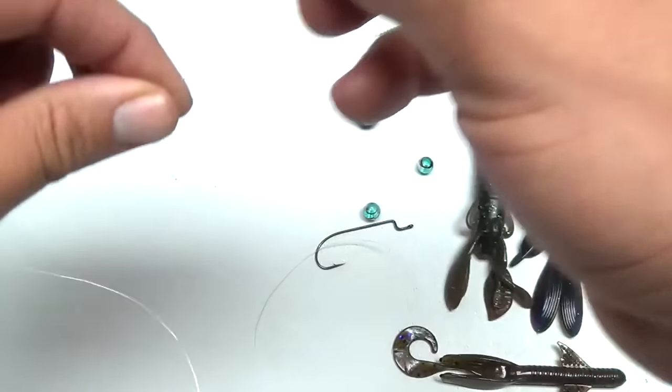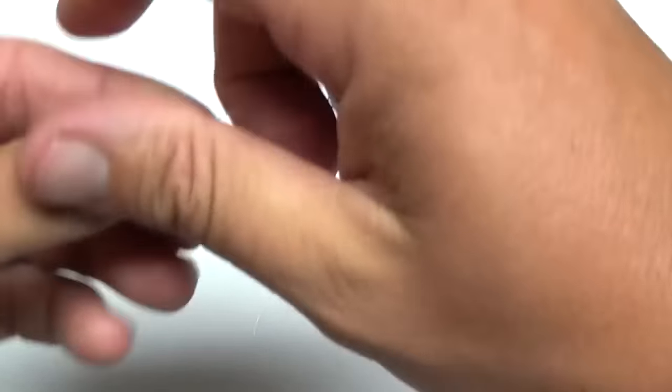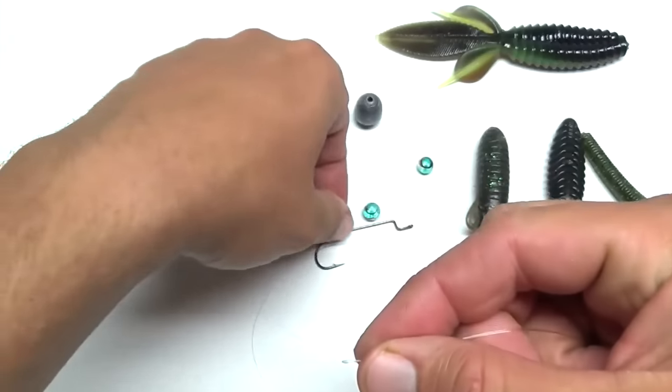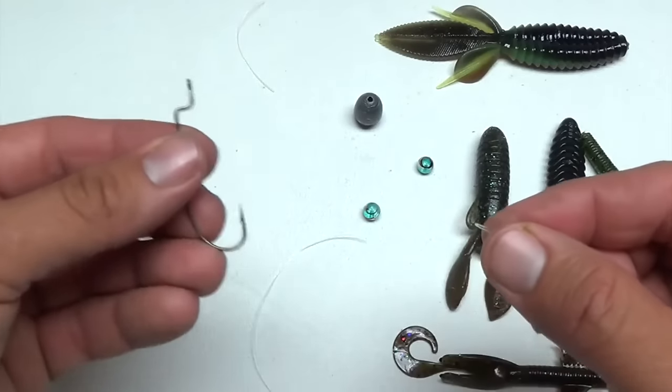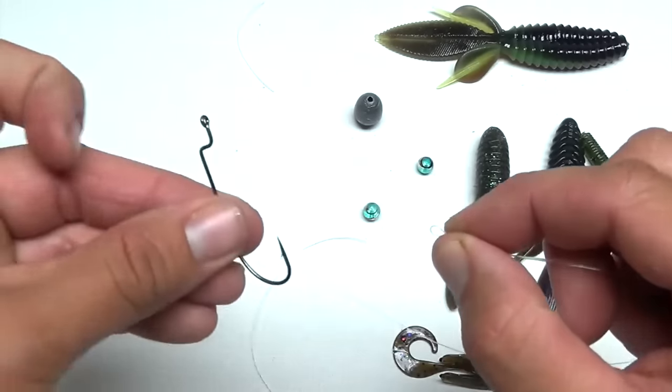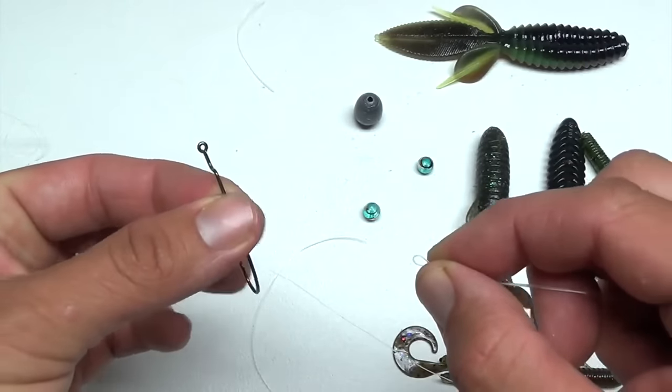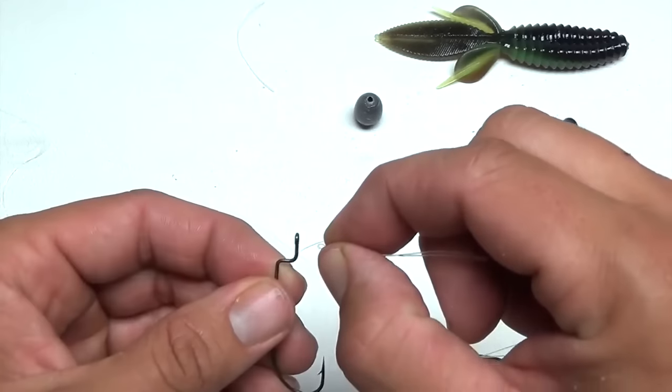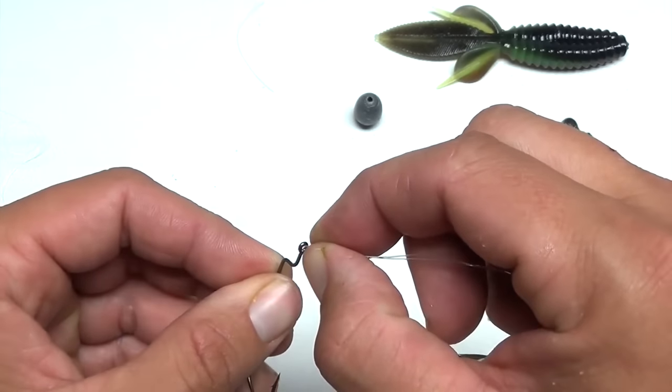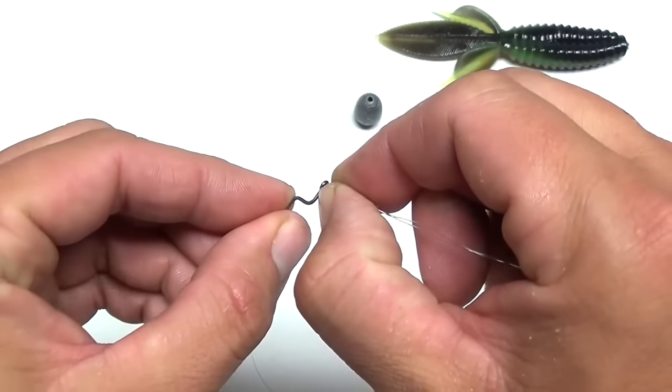All right. Then the last step, tie on your hook. And whatever hook you're going to use for whatever bait you want. I just normally use just an offset worm style hook when I'm Carolina rigging. And then again, I'll just do a polymer knot.